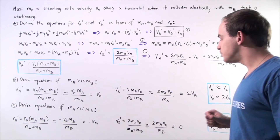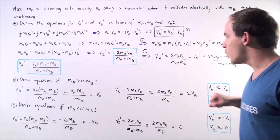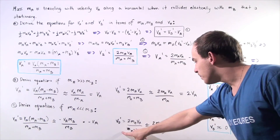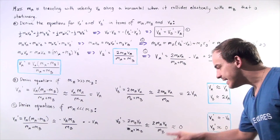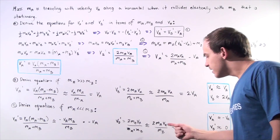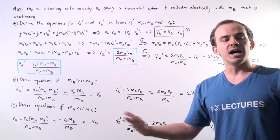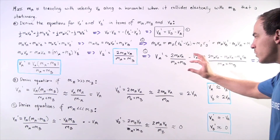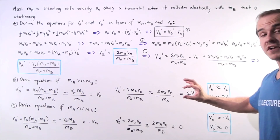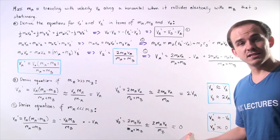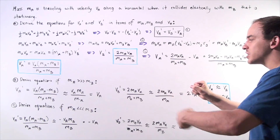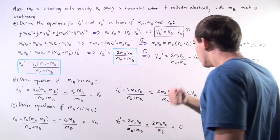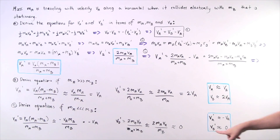For VB prime, the bottom becomes approximately MB. Since MA is much smaller than MB, the numerator two times MA times VA is very small while the denominator MB is very large, so a small number divided by a very large number is approximately zero. This means if a very light object collides elastically with a very heavy stationary object, the heavy object will barely move and its final velocity is approximately zero.